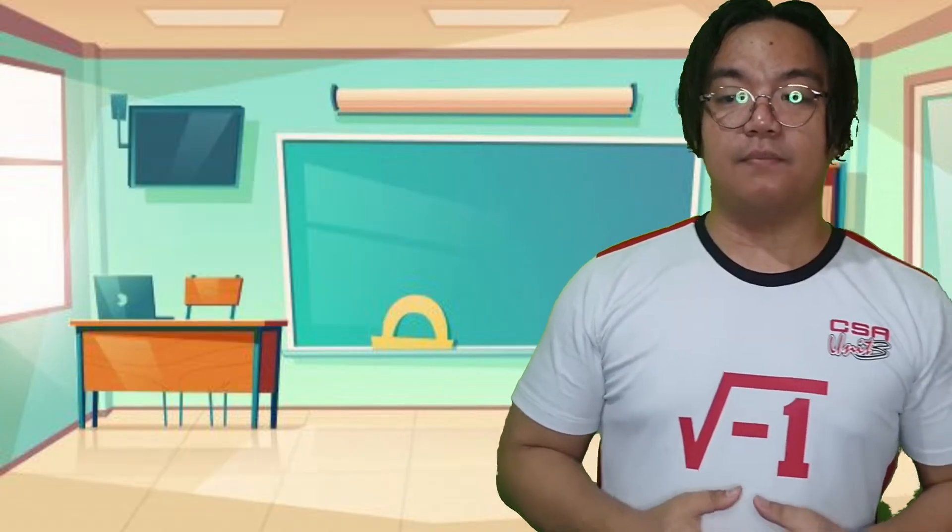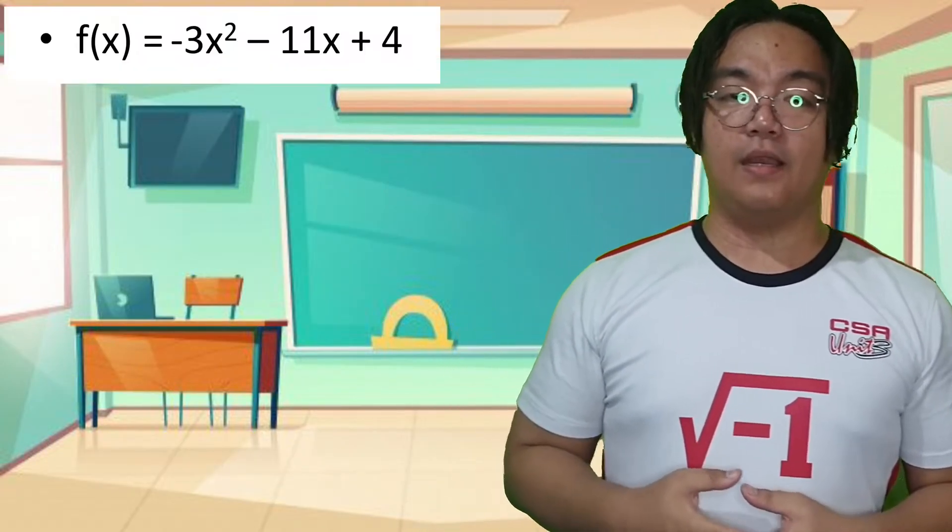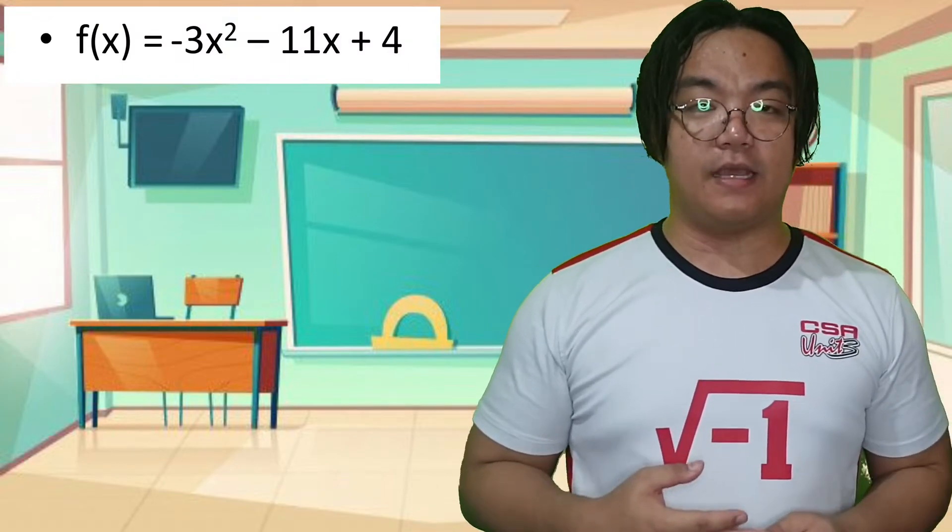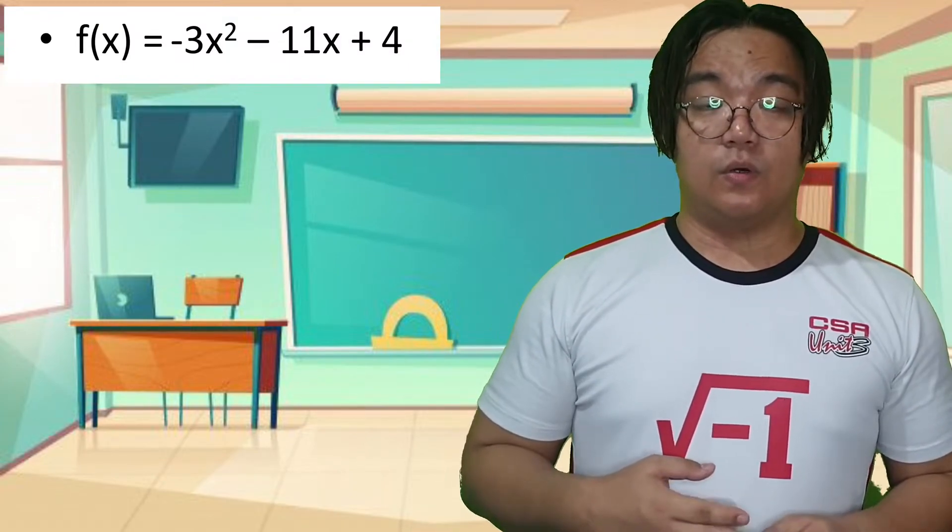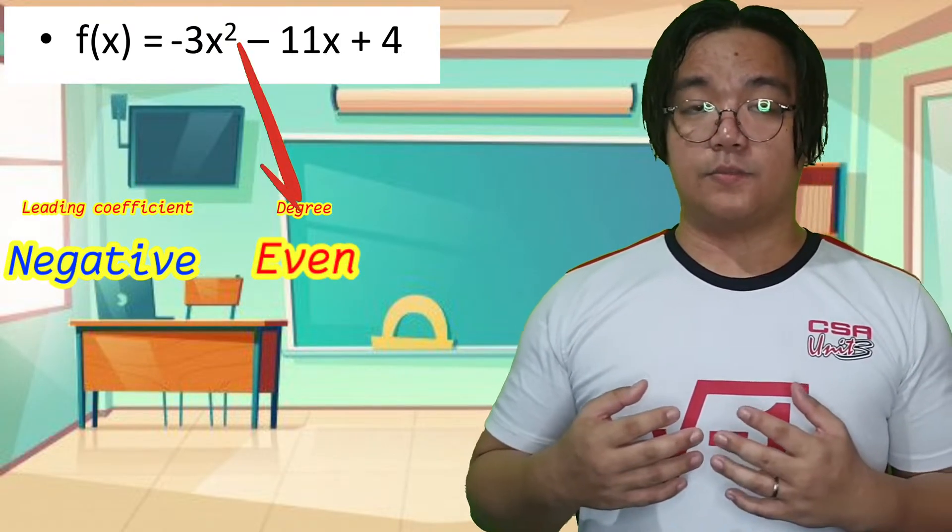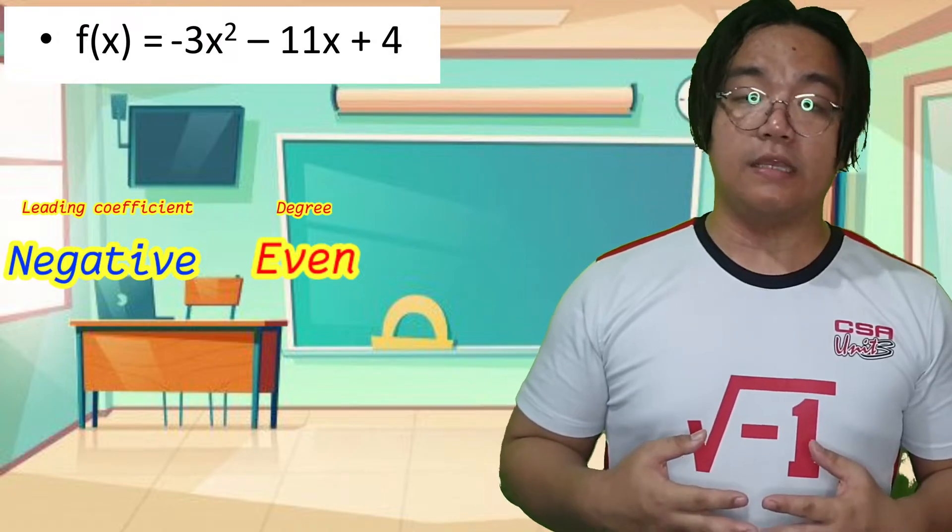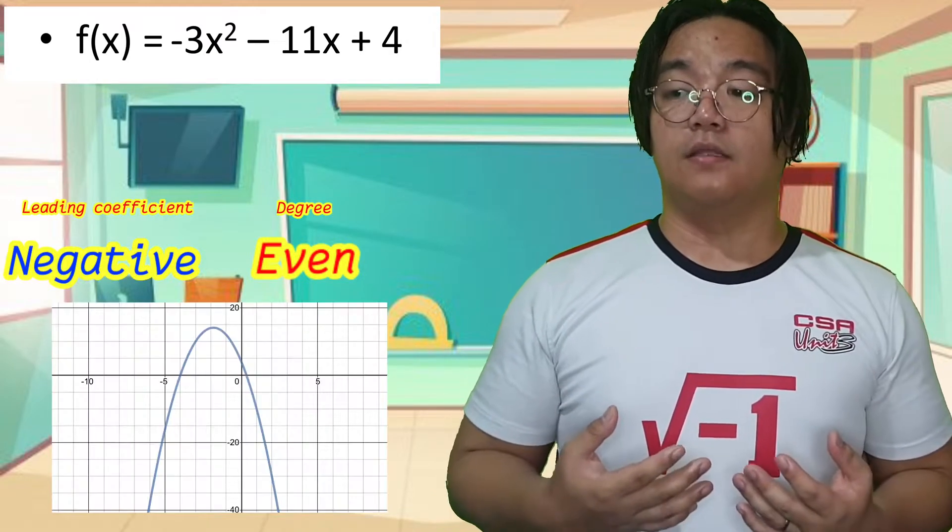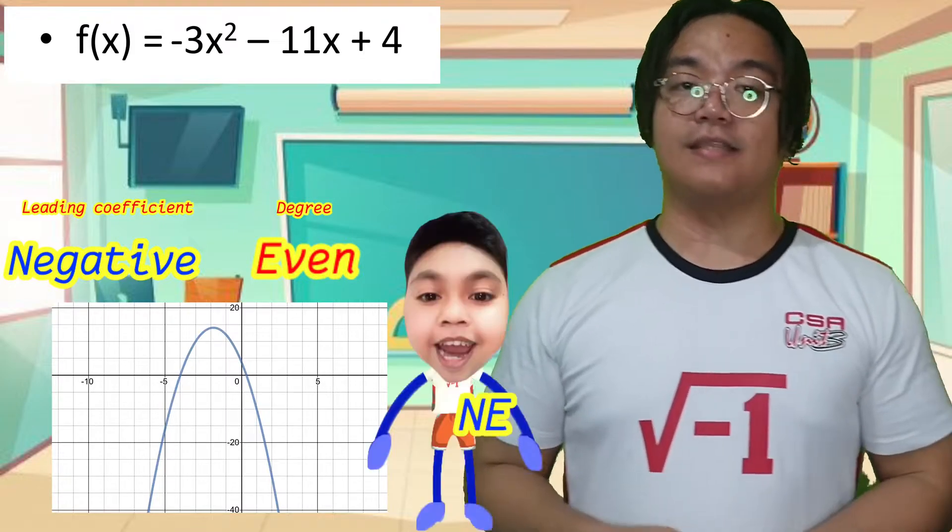Another example is the polynomial f(x) = -3x² - 11x + 4. The leading coefficient is negative 3, and the exponent of the leading term is an even number, 2. This means that the graph drops down on both left and right sides.